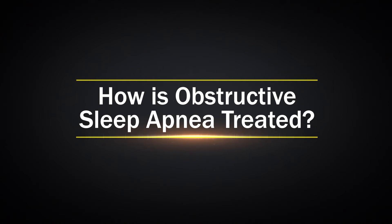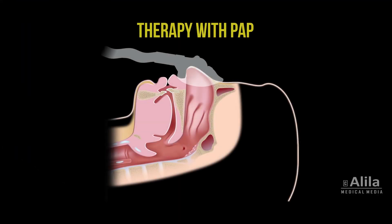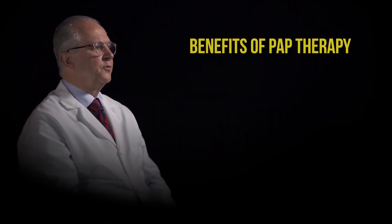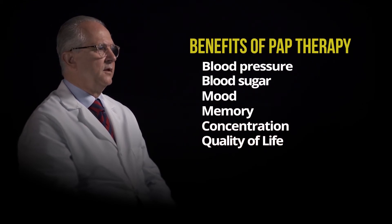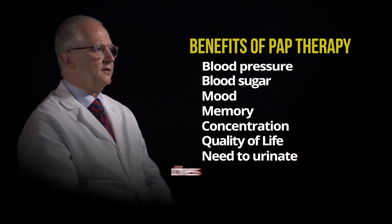How is Obstructive Sleep Apnea treated? In general, Obstructive Sleep Apnea is not often cured, but it can be managed. The most effective treatment is positive airway pressure, or PAP therapy. PAP uses a small machine to blow a stream of air into your throat to keep the airway open while you sleep. PAP therapy eliminates snoring, ensures normal oxygen levels while you sleep, and prevents your sleep from being fragmented. A large body of scientific evidence supports its use. Benefits include improvements in blood pressure, blood sugar, mood, memory, concentration, and quality of life. PAP therapy can also reduce the need to urinate at night and morning headaches.